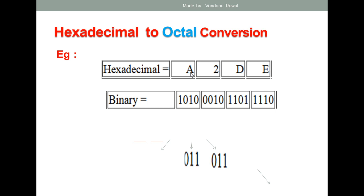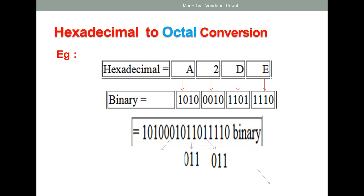Now let's look at the worked example. This is the same hexadecimal number used in the previous lecture on hexadecimal-to-binary conversion. First, you convert it into binary: A is equivalent to 1010, 2 is equivalent to 0010, D is equivalent to 1101, and A is equivalent to 1010. Writing these out gives you the complete binary equivalent of the hexadecimal number.